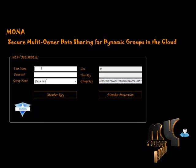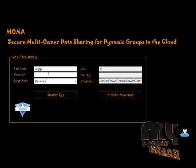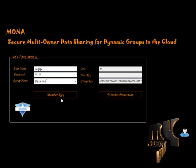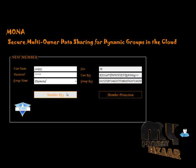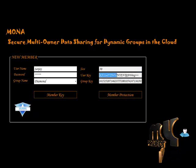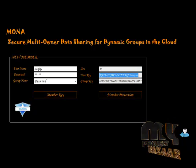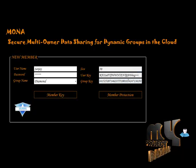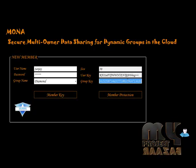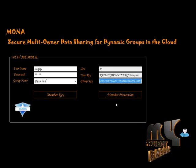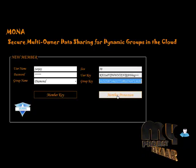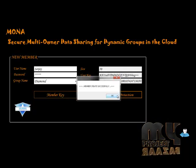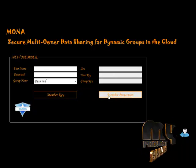Then enter the provider name — I give 'Sanjay'. Then click the password. Then click the member key for the user key. The user key is generated using double hashing. We use the homomorphic and hashing function. The symmetric algorithm is used. Then click member creation — the member is created successfully.